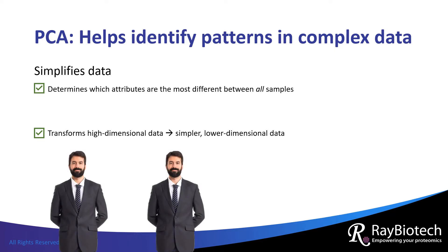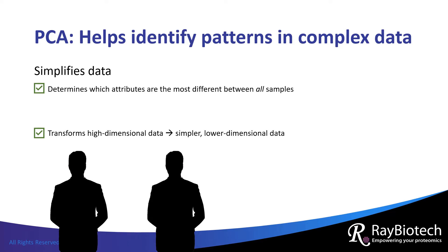If we consider the twin example again, PCA takes high-dimensional data, like comparing two humans, and identifies attributes that make them different. In this case, one twin is infected with a virus while the other is not. By focusing only on the attributes that are different, one twin can be easily discerned from the other. Thus, PCA simplifies higher-dimensional data into lower-dimensional data.